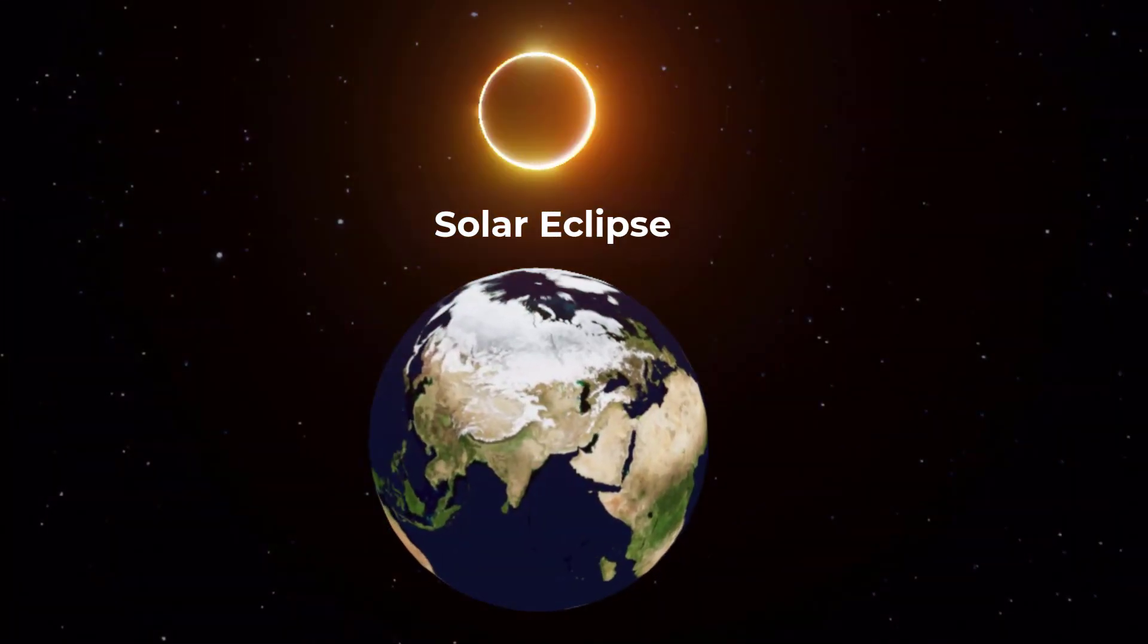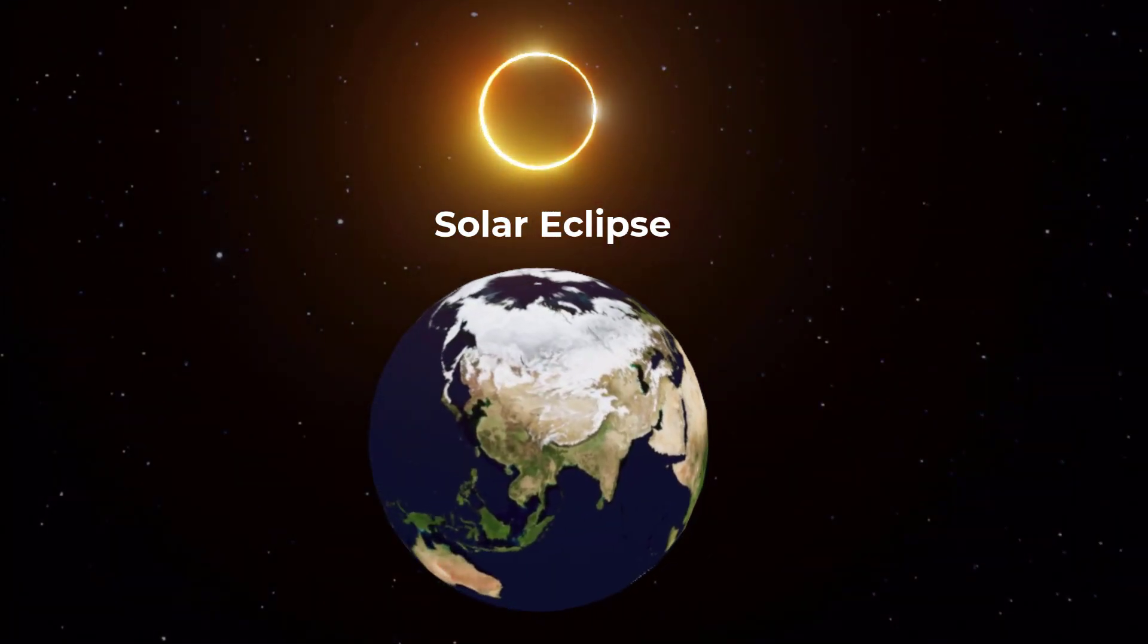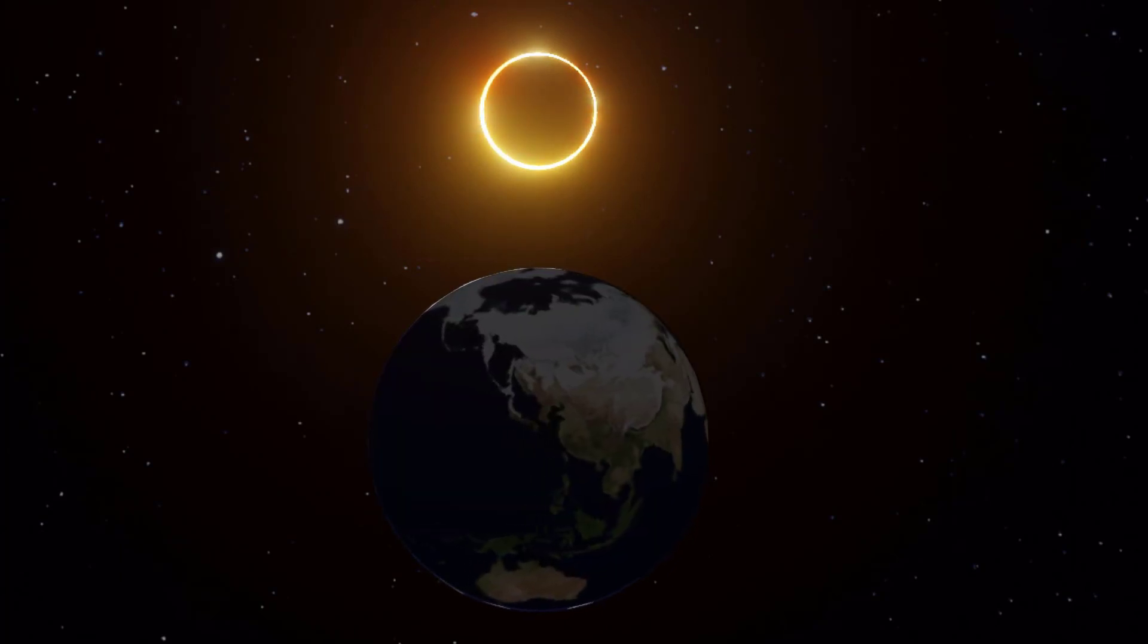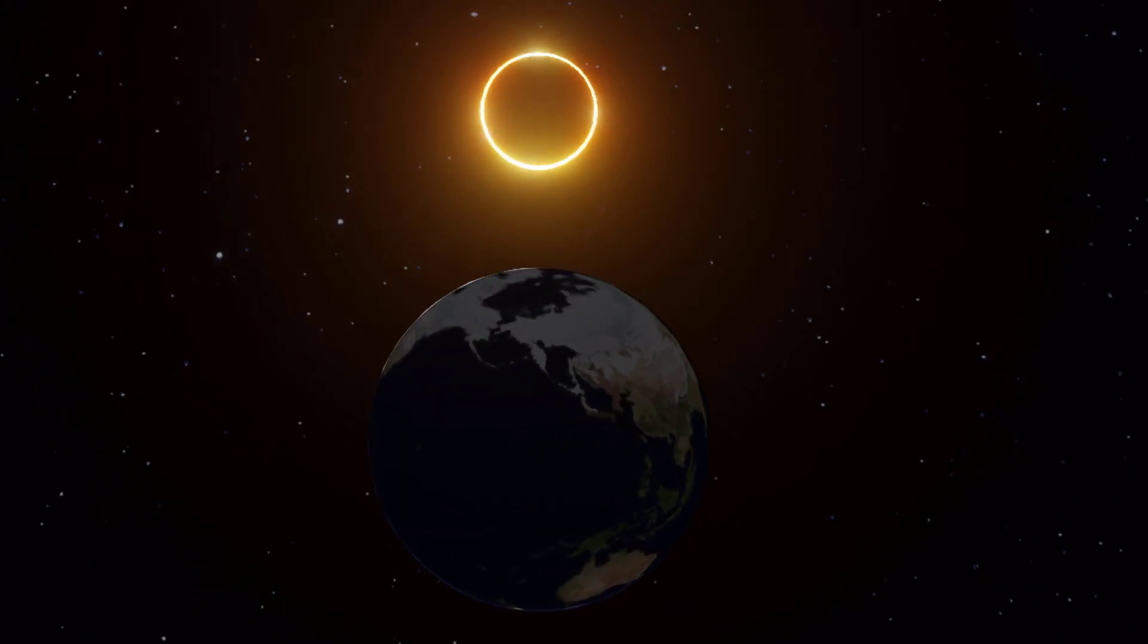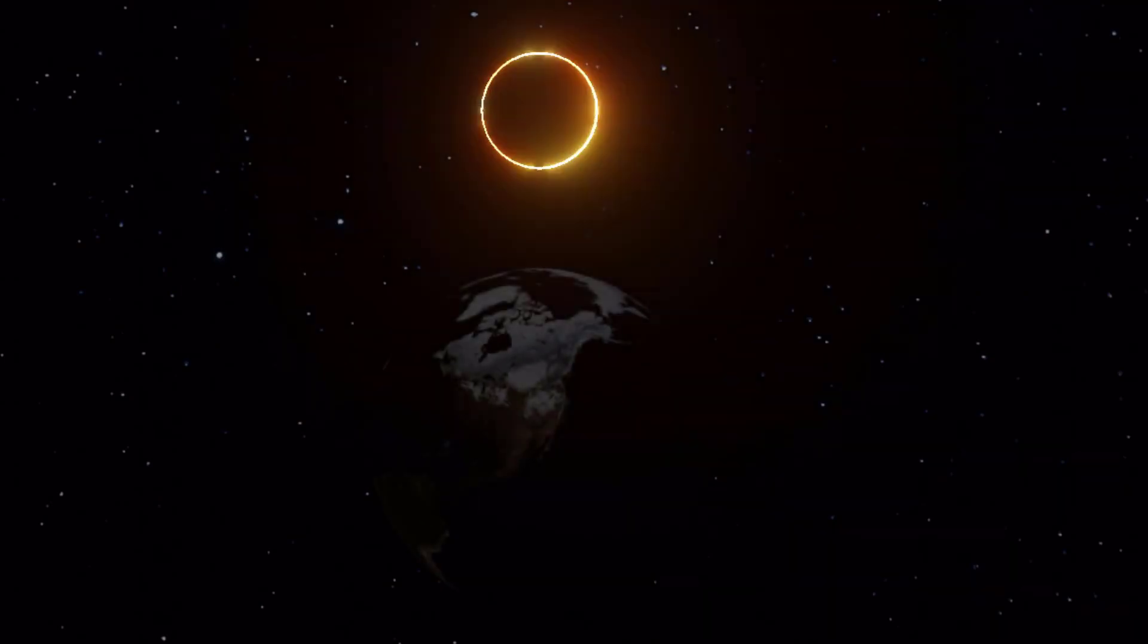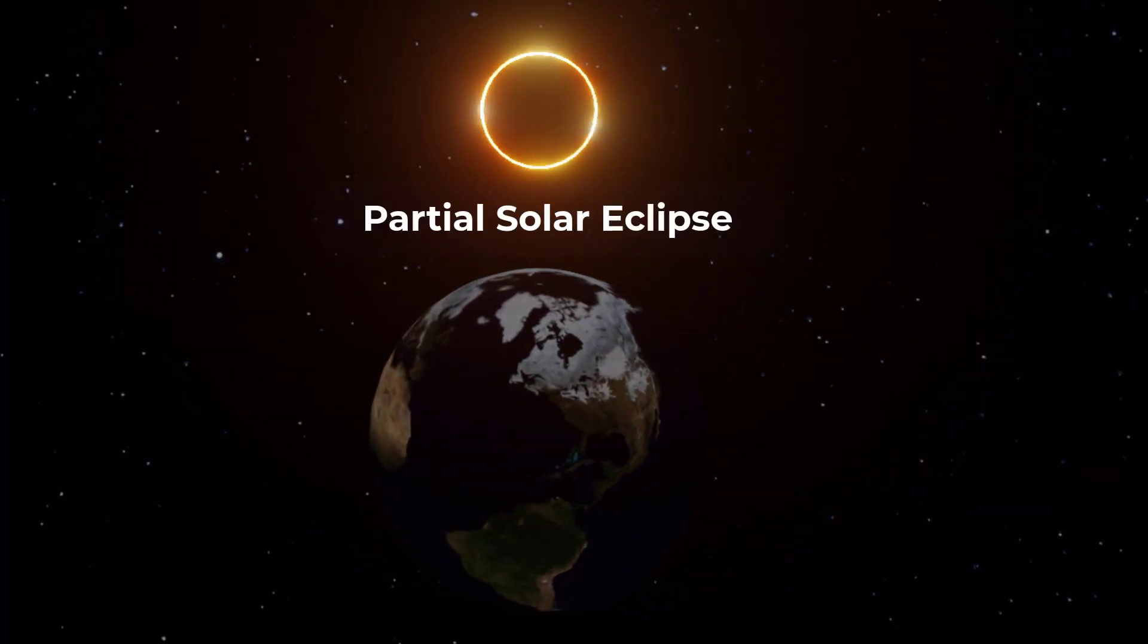During a solar eclipse, the moon passes between the sun and the earth, casting a shadow on the earth's surface. The shadow can either completely block out the sun, causing a total solar eclipse, or partially block it, causing a partial solar eclipse.